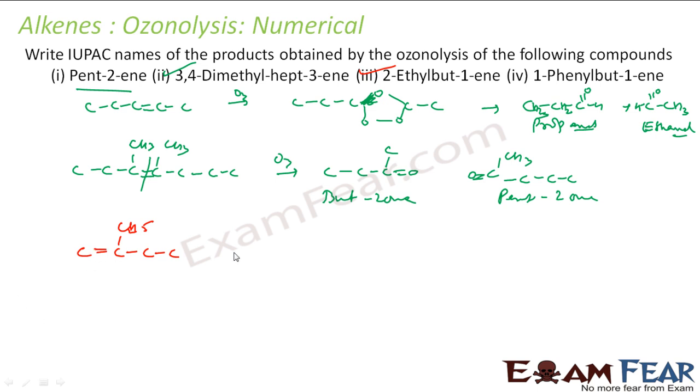Do ozonolysis. Here you add one carbon oxygen. Next you add here one oxygen. Now you add hydrogens, so this will have two hydrogens, this will have three hydrogens, this will have two hydrogens and this will have two hydrogens. This is one, two, three, four, five, so it's pentan-3-one, and this will be formaldehyde.